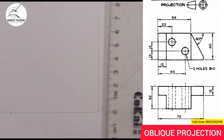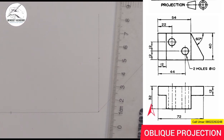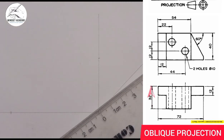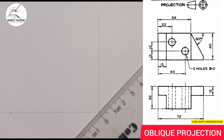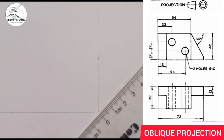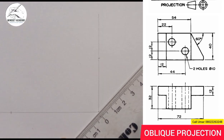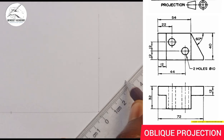Then the width — get that from the plan — which is 32. I'm going to measure 32 from this point here, from 0 to 32.